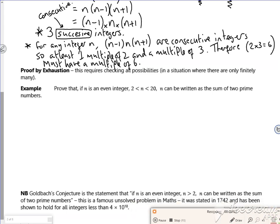Right, the second video for the proof. This is about proof by exhaustion, so you check all possibilities. The proof states that n is an even integer, which is a multiple of 2, so 2n. It can be written as the sum of two primes.